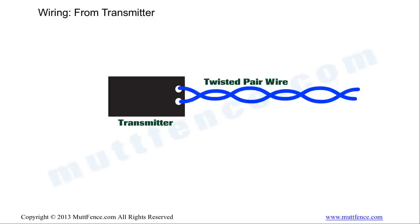First thing we've done here is connected the twisted pair wire to the transmitter terminals. Twisted pair wire, as its name suggests, is a pair of wires that are twisted together. They're separately insulated and twisted together.